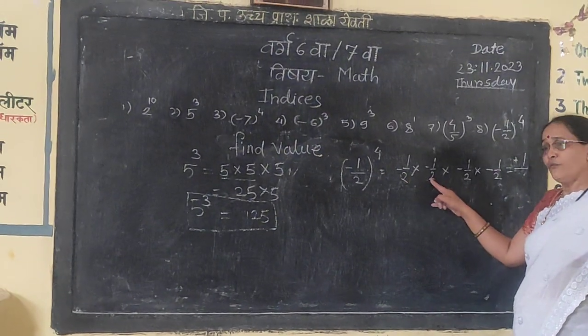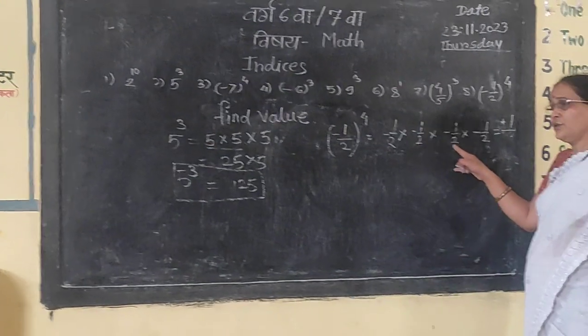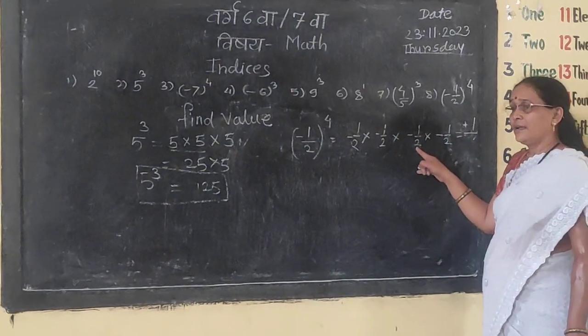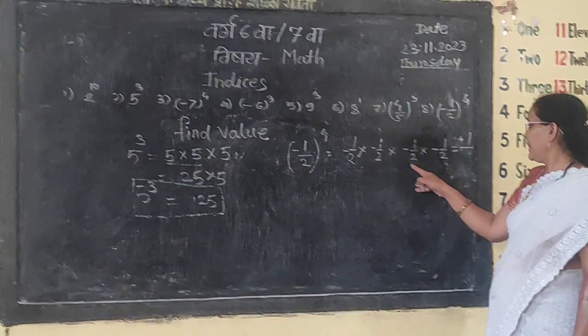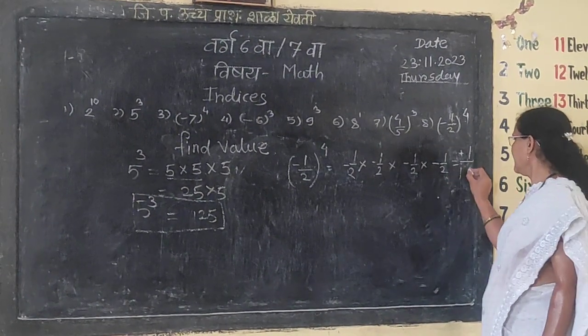2 into 2 is 4, 4 into 2 is 8, and 2 into 16. So the denominator becomes 16.